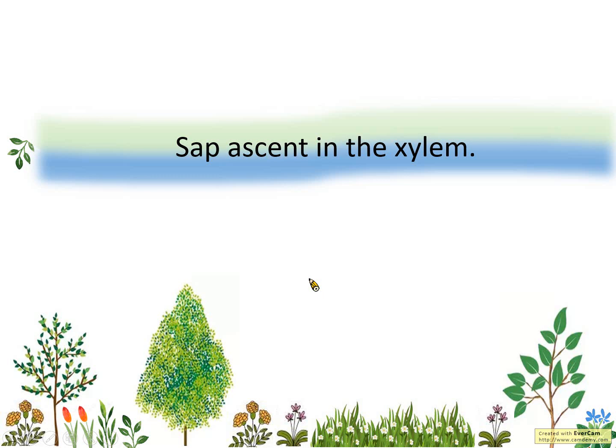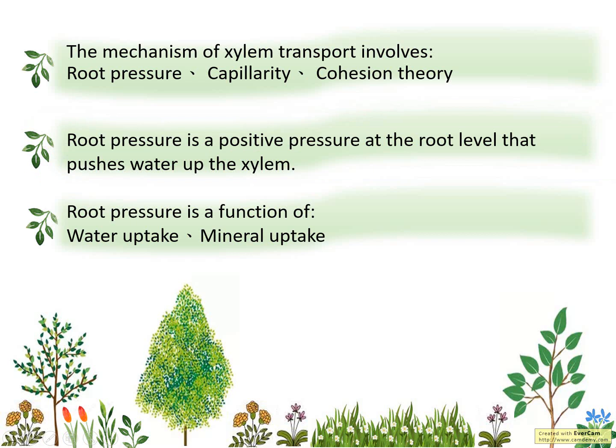The vessel that carries water in the plant is the xylem. Let's see what happens in that. Three factors that affect xylem transport are root pressure, capillarity, and cohesion theory.